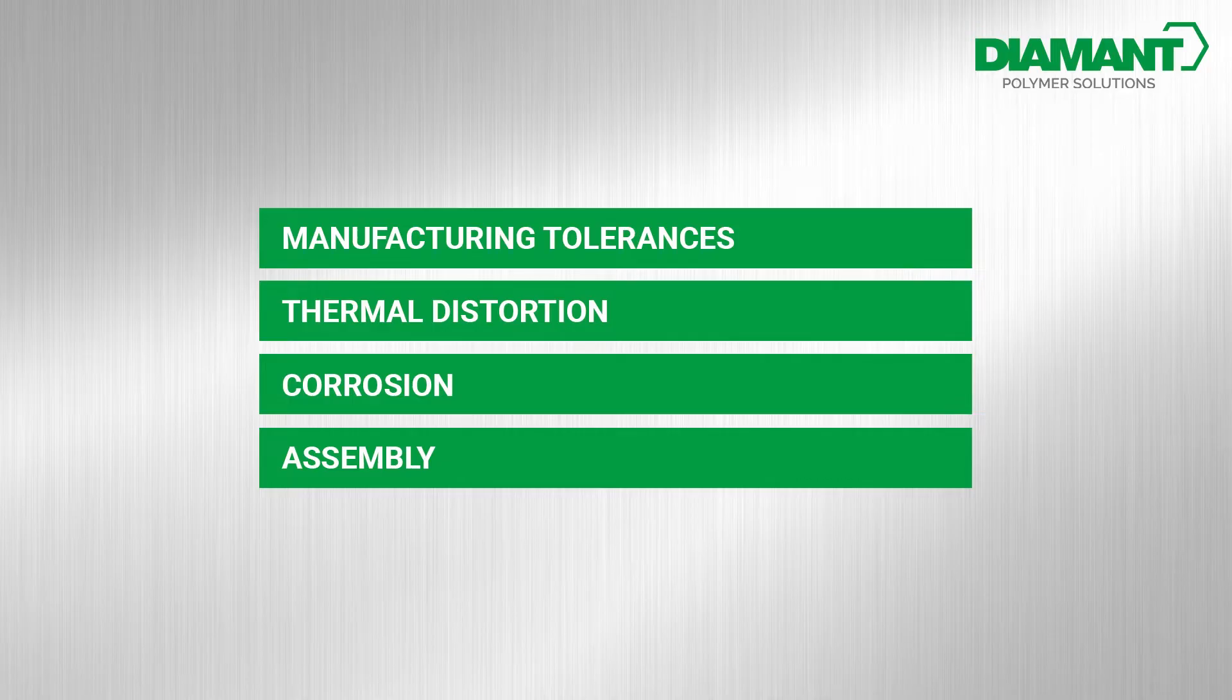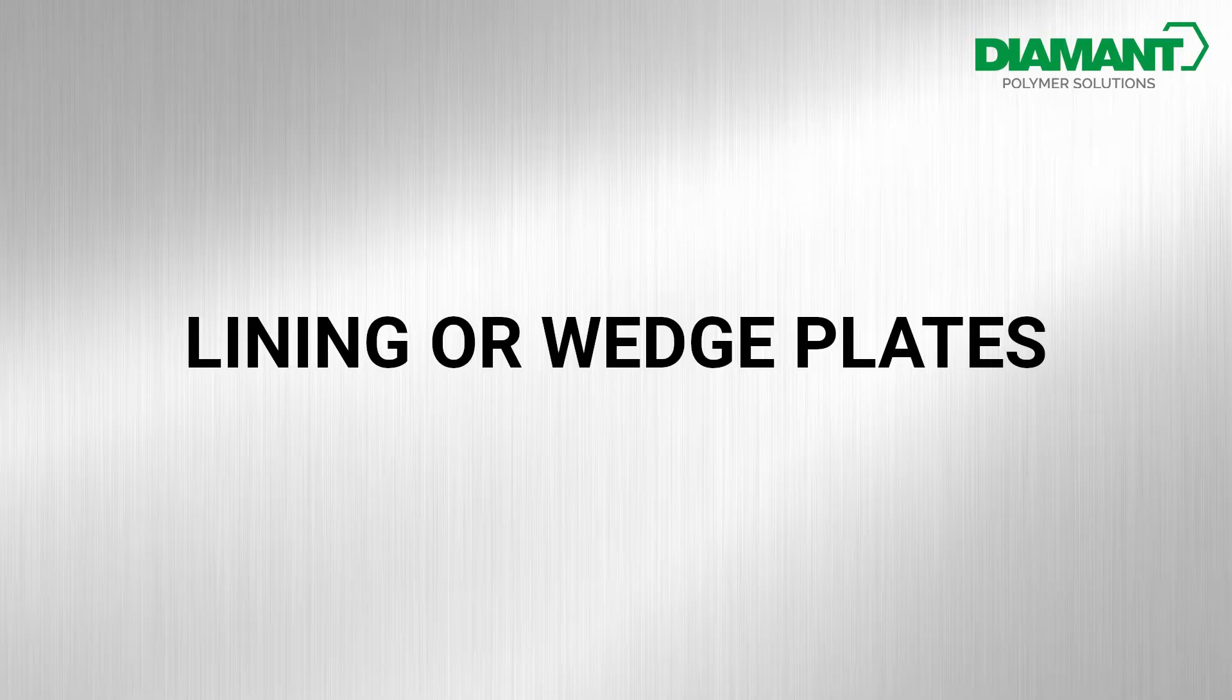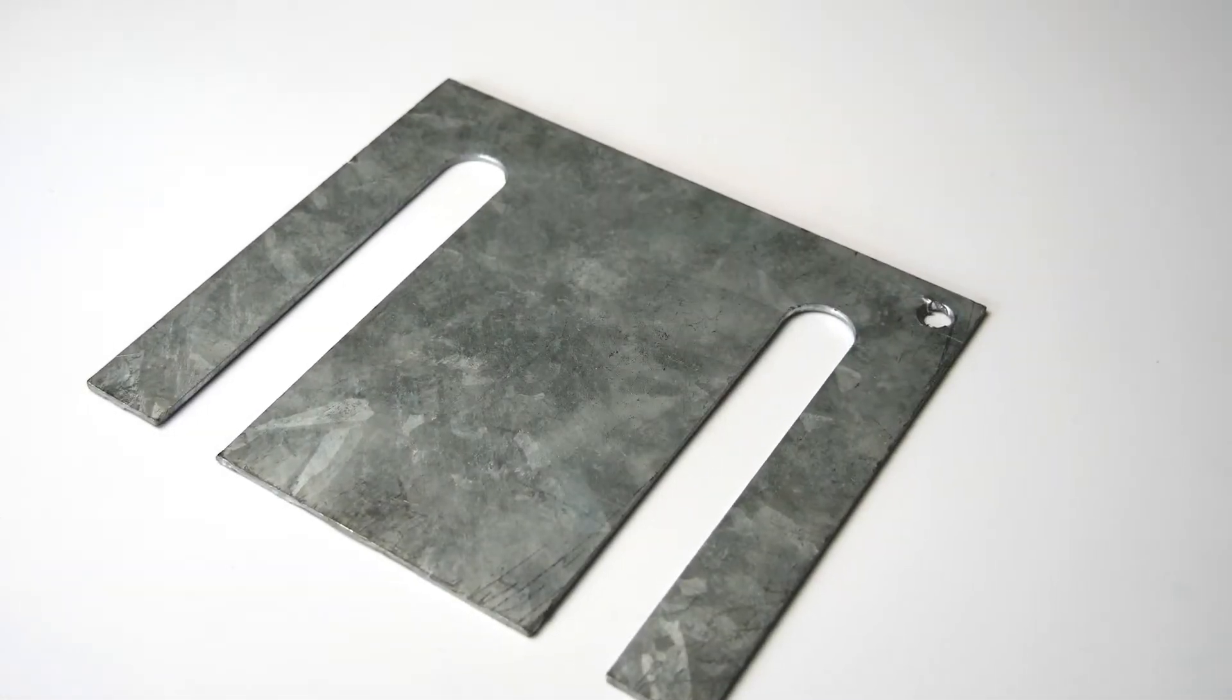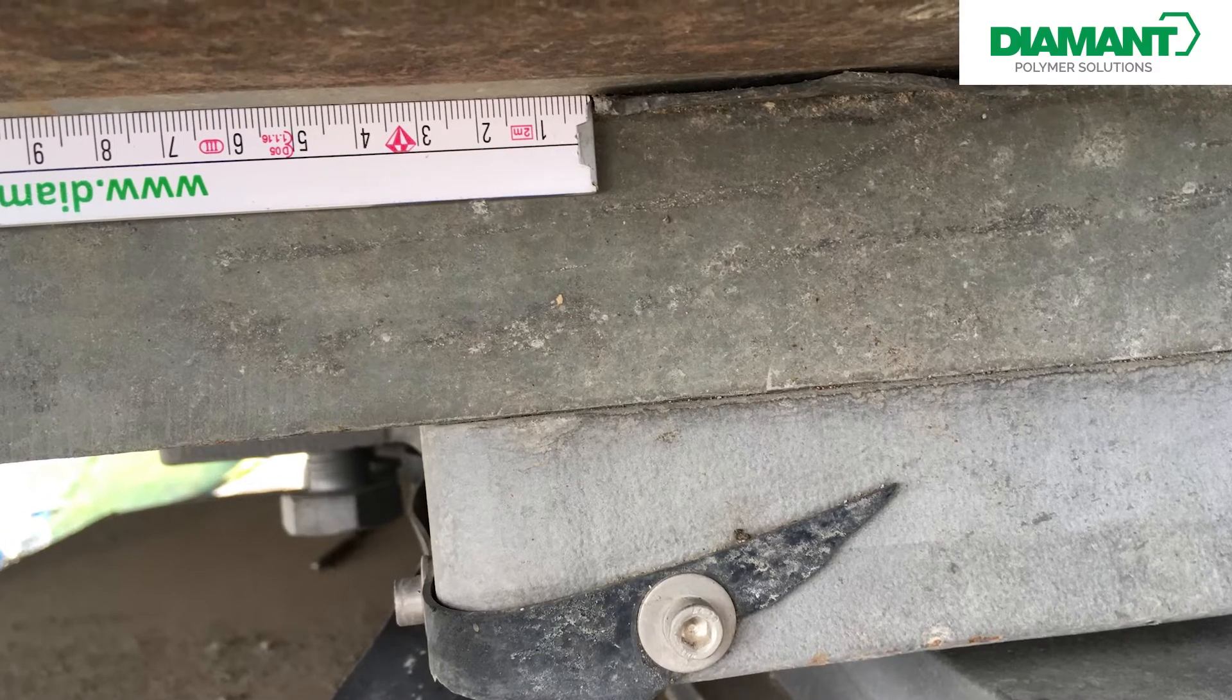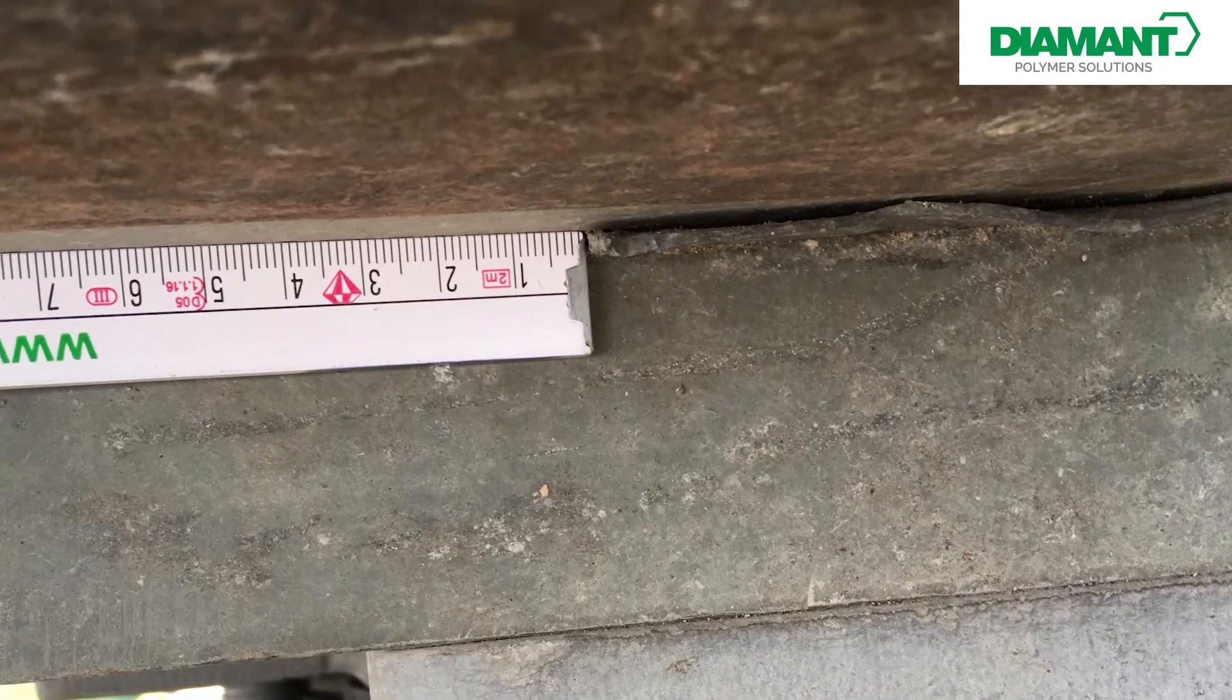But what to do when such gaps occur? One common solution is lining or wedge plates, which usually work well. But what if the gaps are misshapen, for example due to thermal distortion or corrosion?